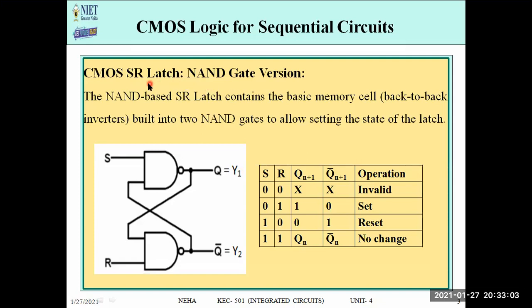We are looking at an SR latch using NAND gate. As reviewed in digital electronics, latches can be designed using either NAND gates or NOR gates. For the NAND gate version, this is the circuit diagram for the CMOS SR latch. We have used two NAND gates with S and R as inputs — Set and Reset — and two outputs Q and Q-bar. The other inputs to each NAND gate are the outputs fed back.